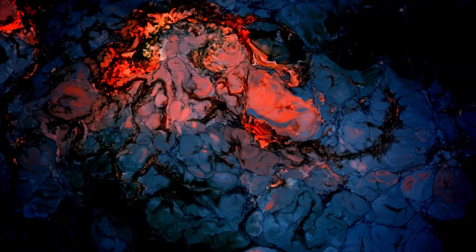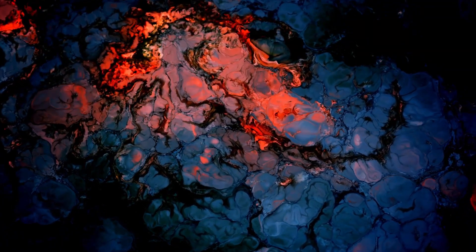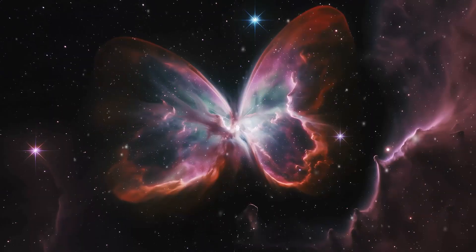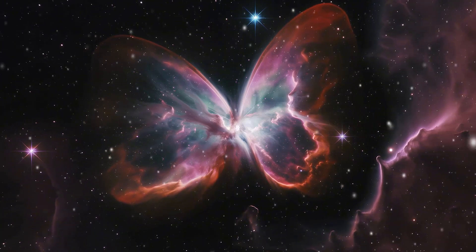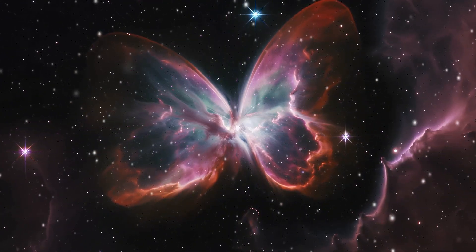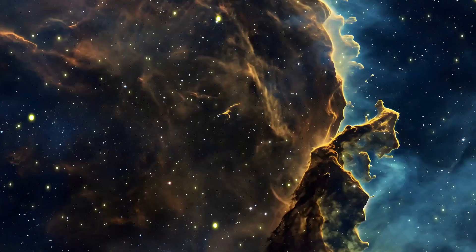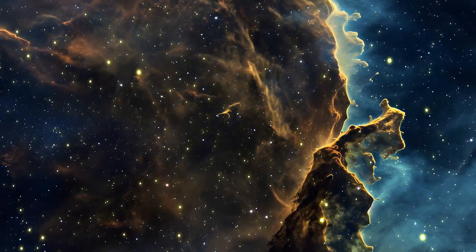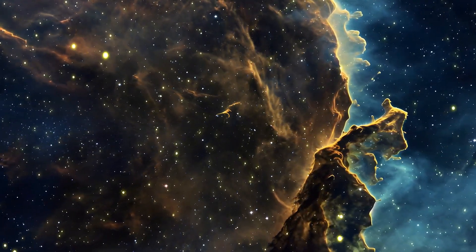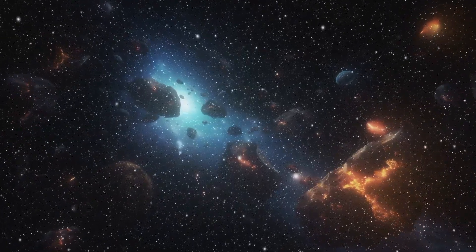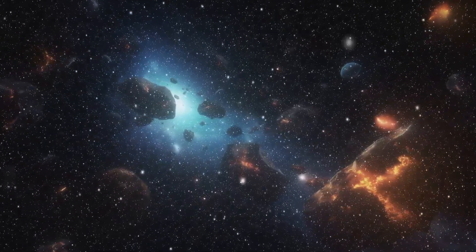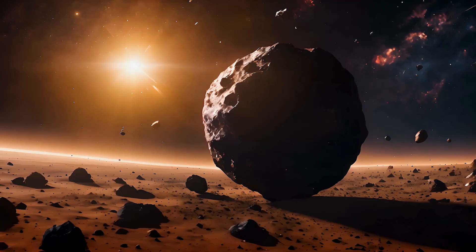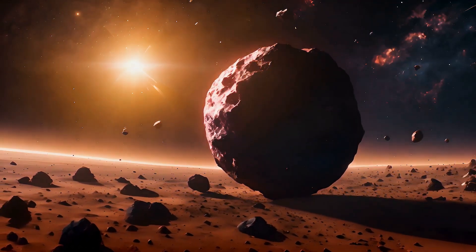When massive stars explode as supernovae, their brightness can surpass that of entire galaxies. What would happen if Alpha Orionis were to undergo a similar transformation? Should it explode as a supernova, it could become the second brightest object in the sky, second only to the sun. Even at a considerable distance, the energy released in such an explosion might be so intense that it could be visible even during daylight hours. This blinding spectacle would cast shadows in the middle of the day, offering an awe-striking yet unnerving experience.